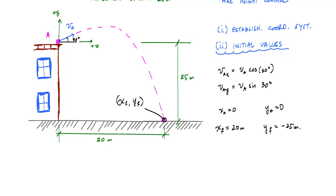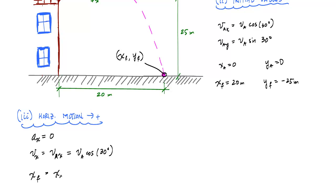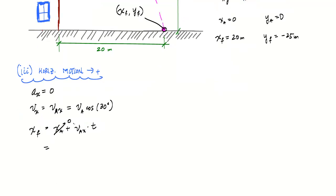Now I look at the motion in each coordinate axis — horizontal and vertical. For horizontal motion, the acceleration in x is 0, so there's no horizontal acceleration. Integrating with boundary conditions gives vx = v0x — constant velocity, which is VA cosine of 30 degrees. Integrating again, the position xf equals xa plus VAx times t. Since xa is 0, xf equals VA cosine of 30 degrees times t.